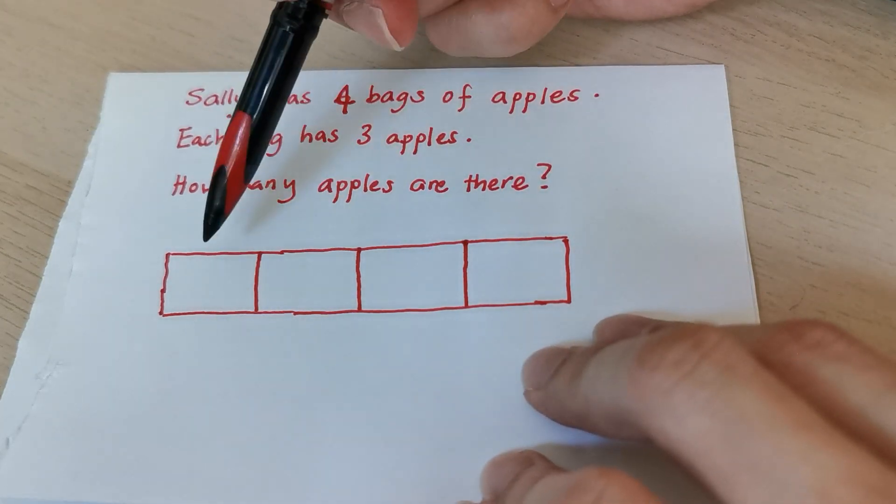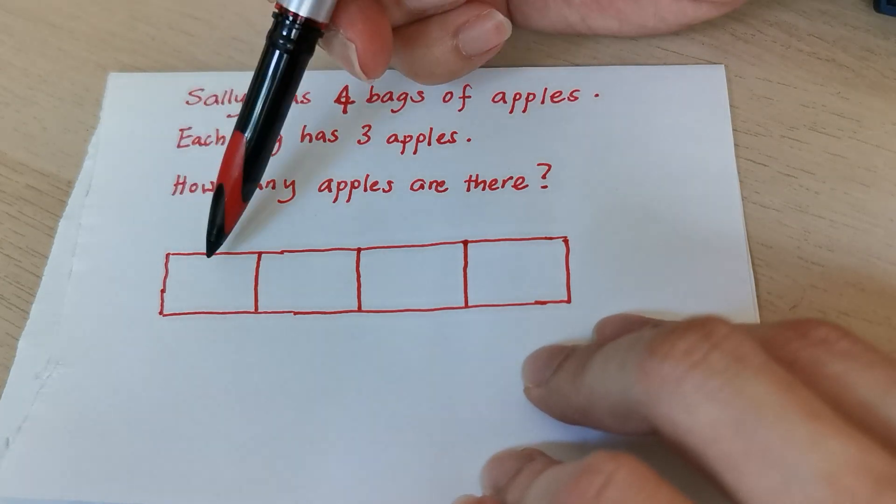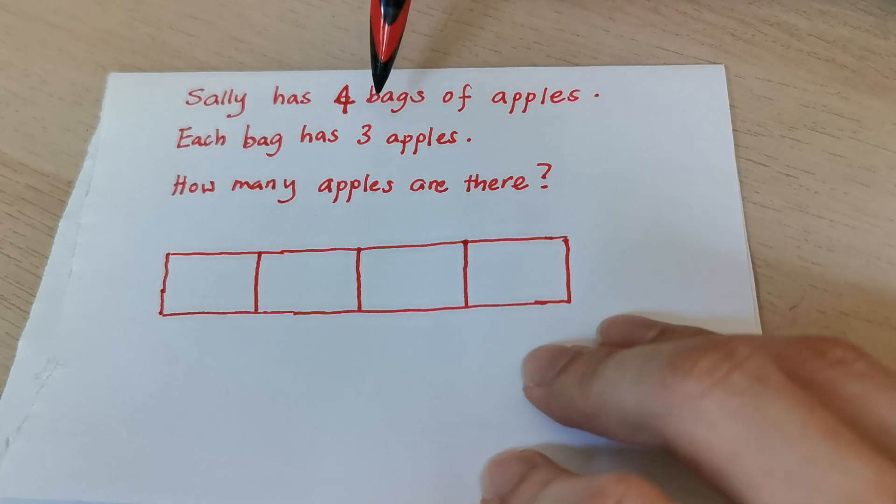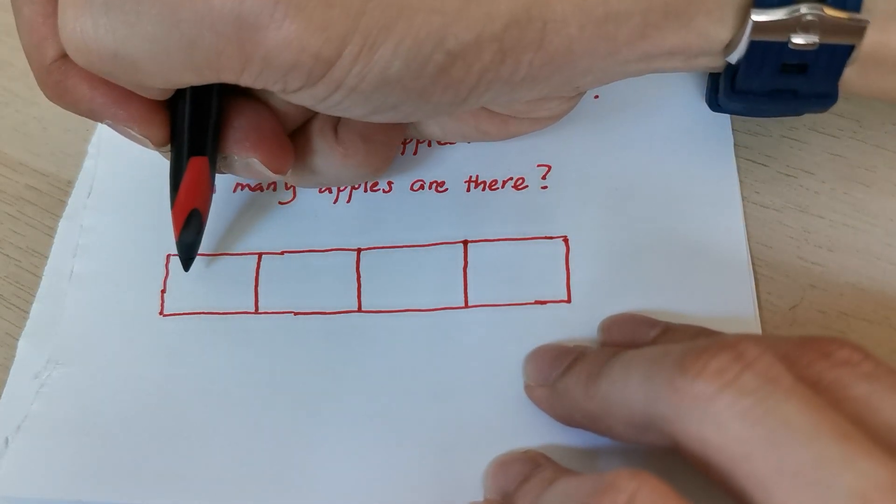Now, four boxes, each box represents one bag. One bag, two bag, three bag, four bag. Oh, each bag has three apples. I think I know how to draw apples. So let's draw three apples each.